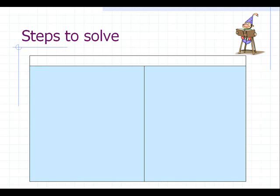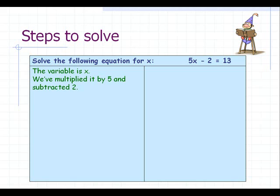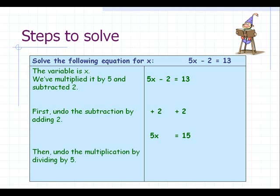Similarly, to solve for x in the equation 5x minus 2 equal to 13, we will undo all the operations on it. To undo subtraction, we will add 2 to both sides, and then to undo multiplication by 5, we will divide both the sides by 5.